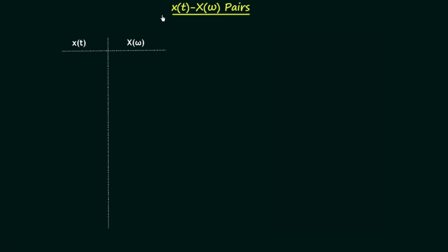In this presentation, I will give you x(t)-X(ω) pairs. If you remember in the Fourier series chapter, I gave you x(t)-cn pairs, and in the same way in the Fourier transform chapter, I will give you x(t)-X(ω) pairs — that is, pairs of time domain signals and their corresponding Fourier transforms. These pairs are very useful while solving multiple choice questions; in many MCQs you don't even need to solve the question and can get the answer directly using the pairs.